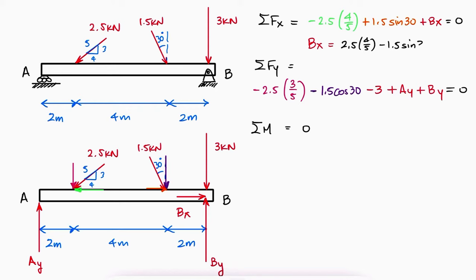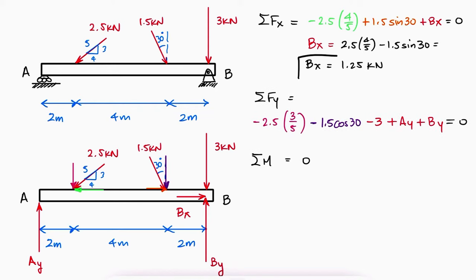The horizontal reaction force at B can be found from the sum of forces in x, but the vertical reactions cannot be found from only using the sum of forces in the y-direction.